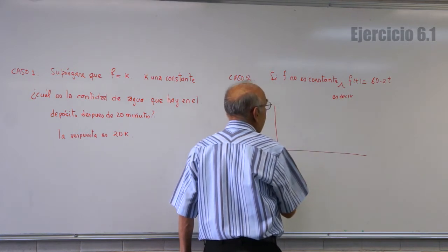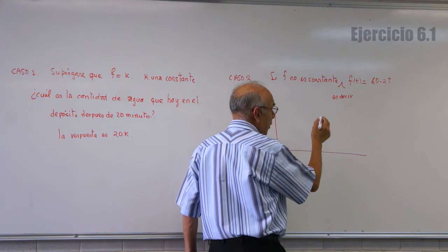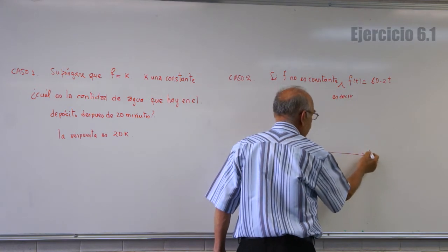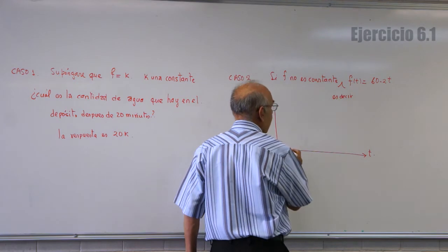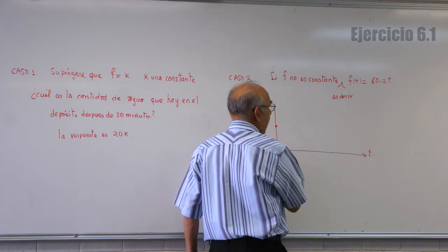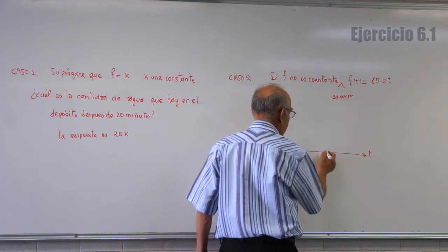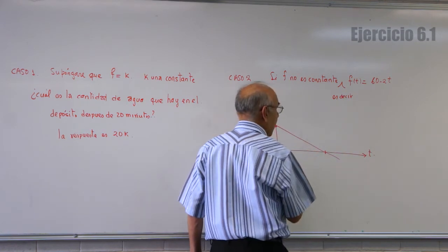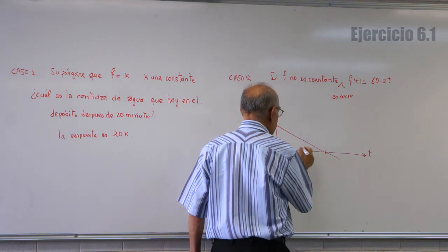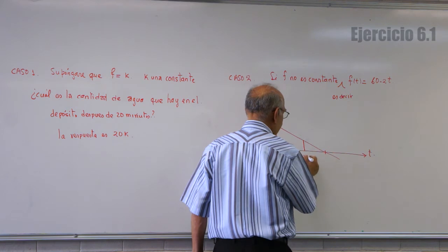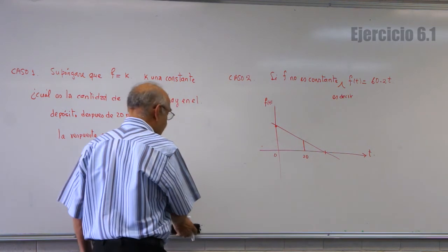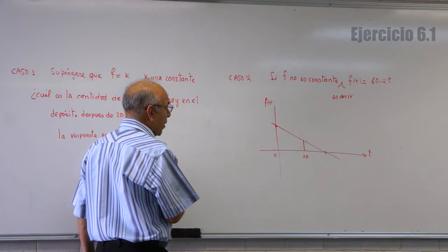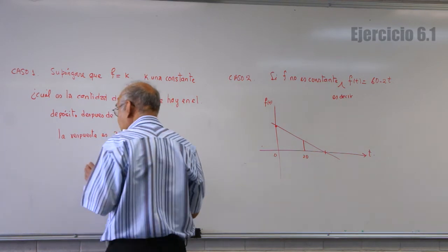F de T es una función lineal, entonces su gráfica es una recta. Cuando T es igual a 0, el valor es 60. Y si T vale 30, la gráfica es una recta en el intervalo 0 a 30. Pero a mí me interesa lo que sucede en el intervalo 0 a 20. ¿Qué hacemos ahora para encontrar la cantidad de agua en el tanque en los primeros 20 minutos?